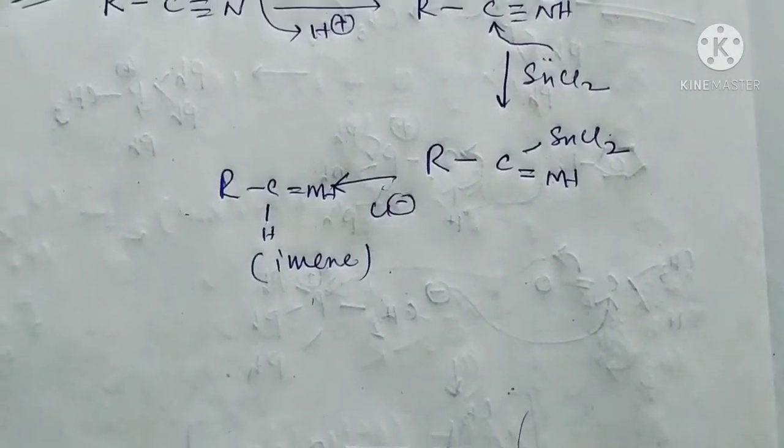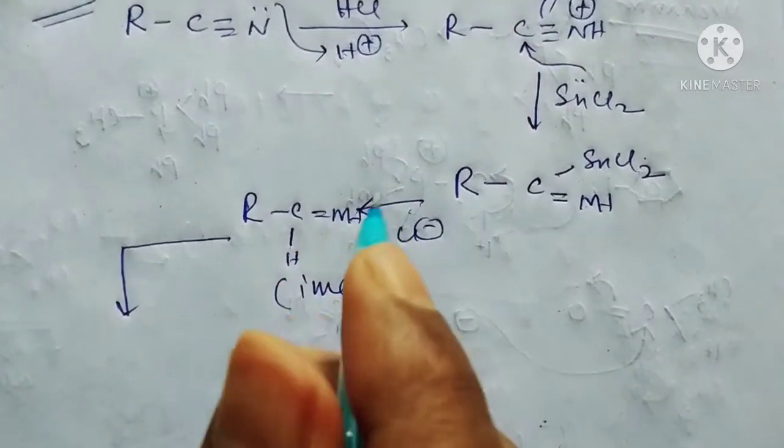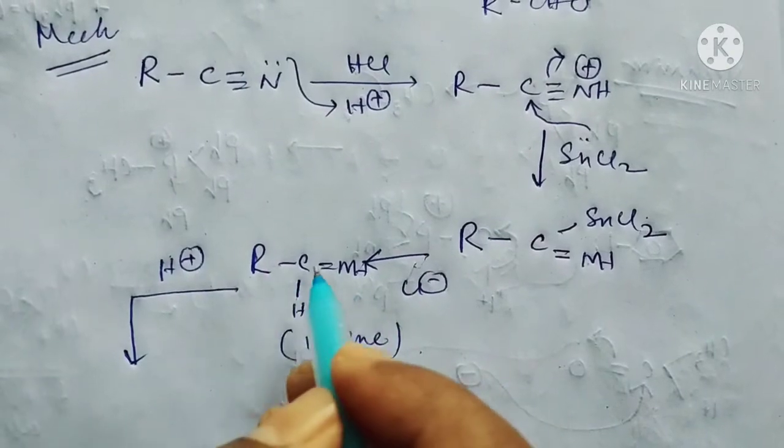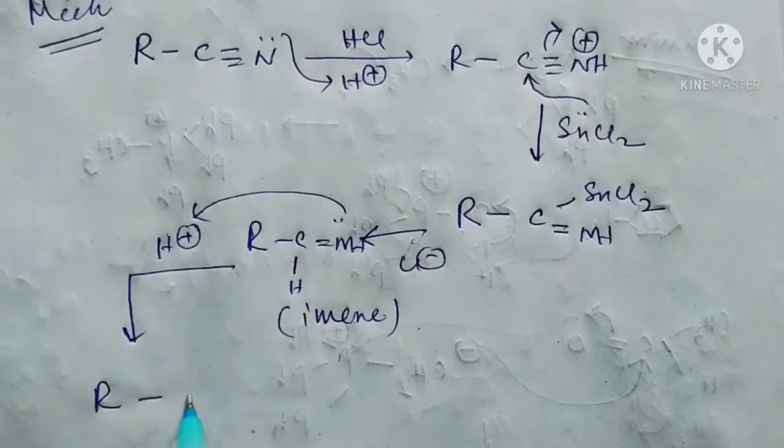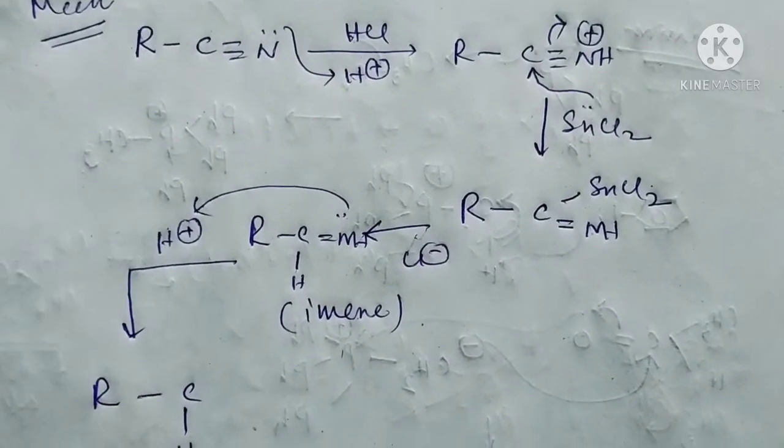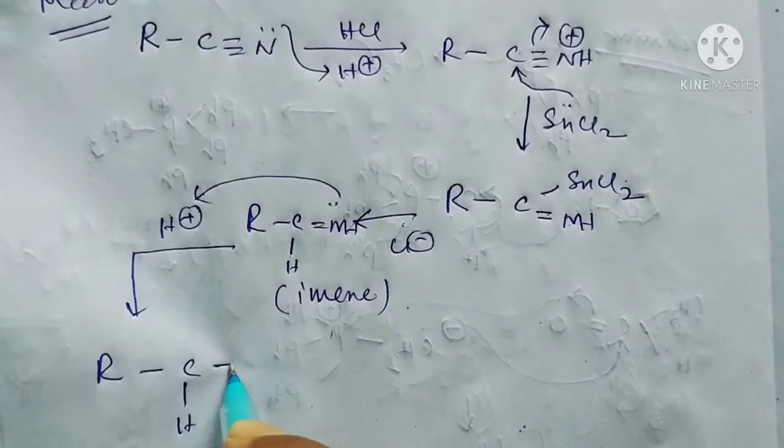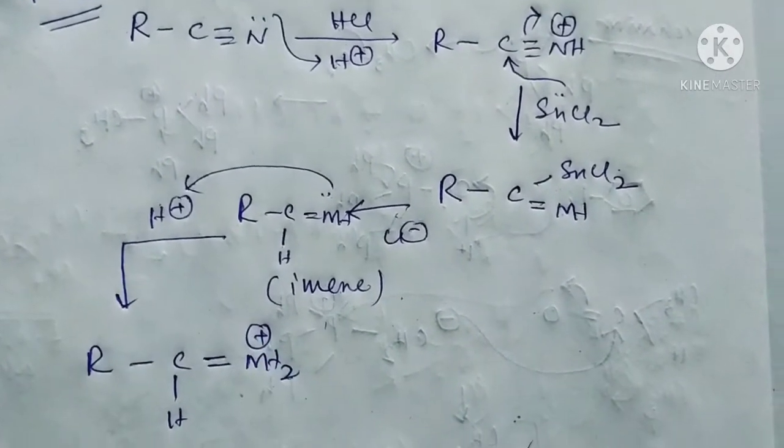Now this imine compound, this is the main state. In presence of H+, H+ is always present there. It takes off this hydrogen and then R-CH and then this NH2+.